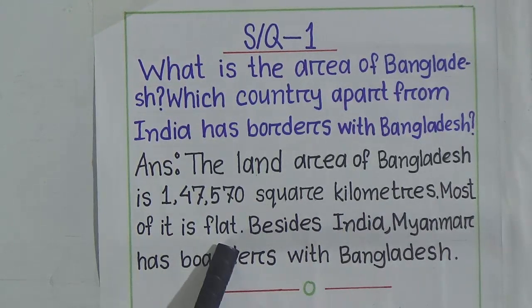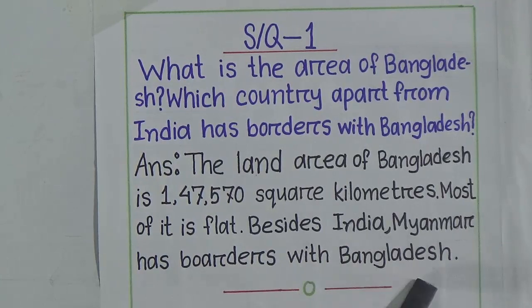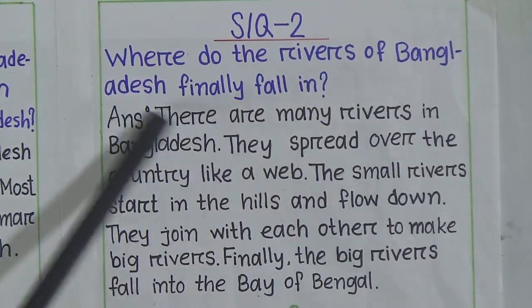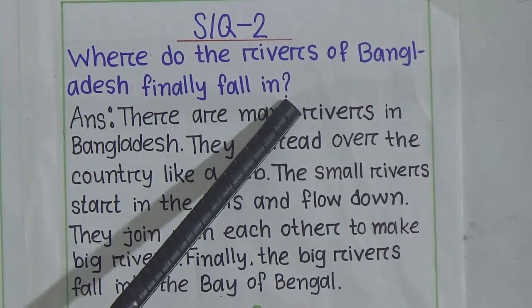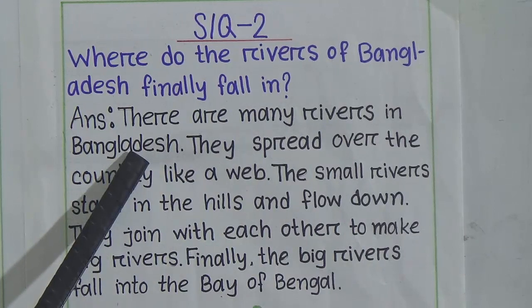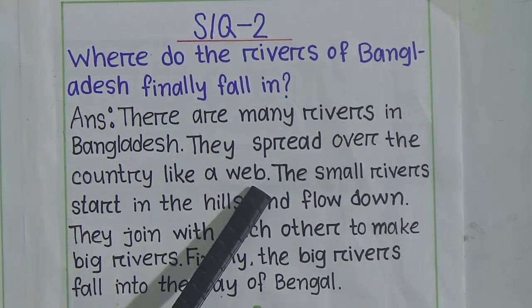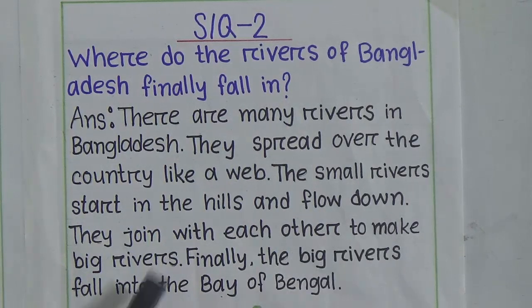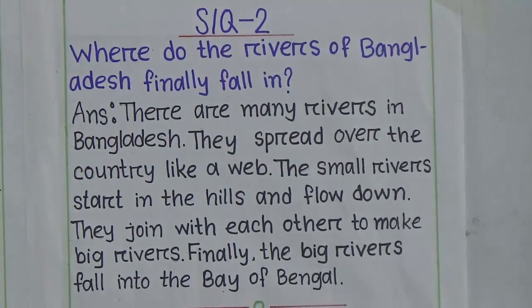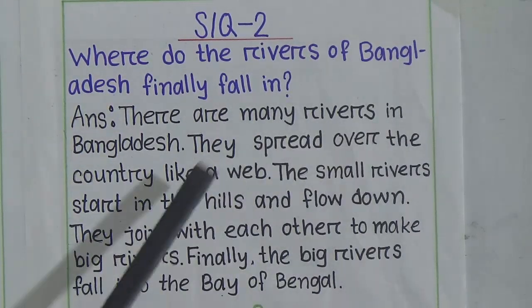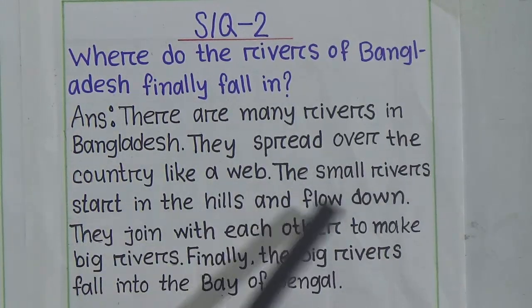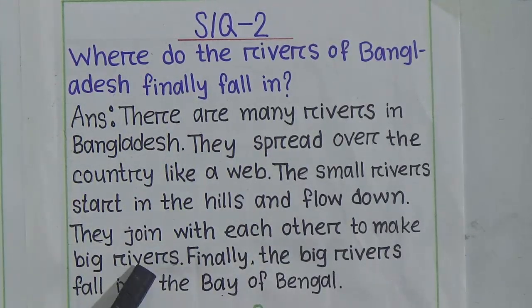Short question 2: Where do the rivers of Bangladesh finally fall in? The answer is: there are many rivers in Bangladesh. They spread over the country like a wave. The small rivers start in the hills and flow down. They join with each other to make big rivers. Finally, the big rivers fall into the Bay of Bengal.